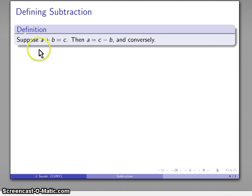Which is the following: Suppose if I know a plus b is equal to c, then I immediately know a is equal to c minus b, and conversely. Which is to say, if I know a equals c minus b, then I know that a plus b is equal to c.